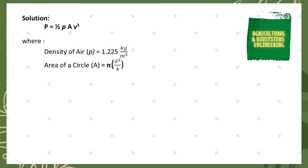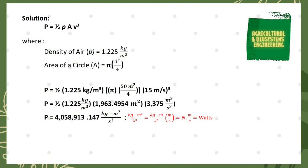With the given values, we can now solve using direct substitution. Wind power is equal to ½ times the density of air, which is 1.225 kilograms per cubic meter, times the area of a circle, which is π times diameter of 50 meters squared divided by 4, times the cube of the velocity, which is 15 meters per second.